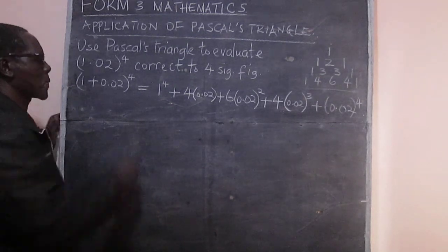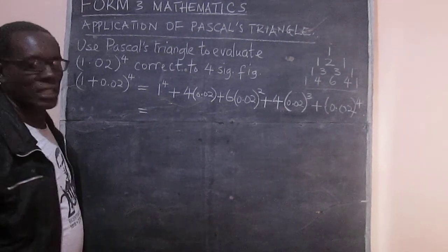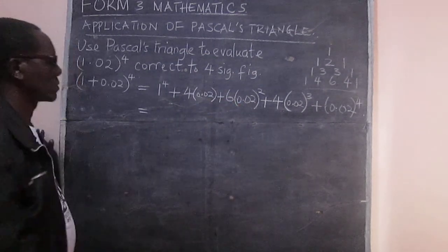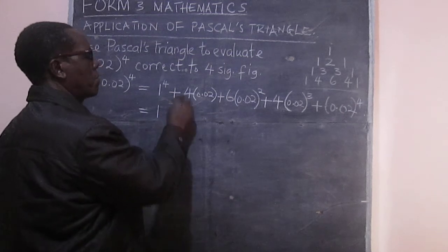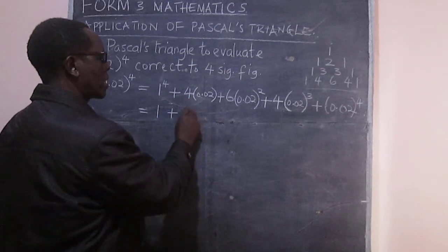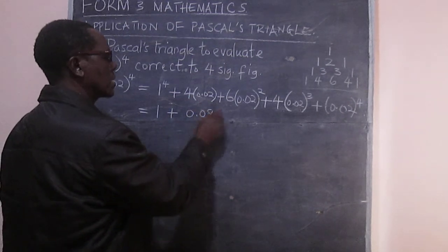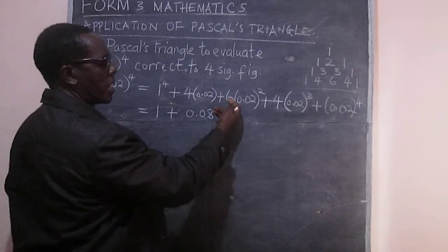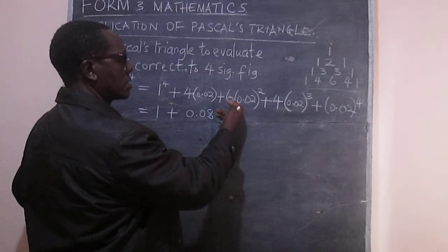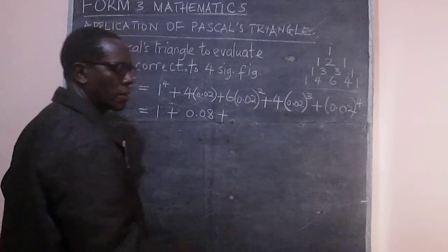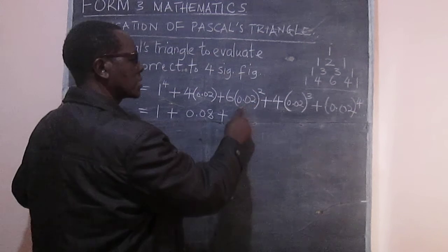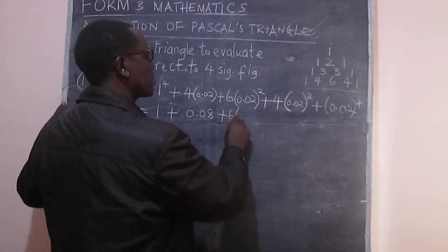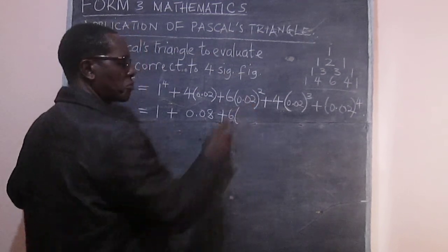So the remaining bit now is to simplify this. 1 raised to the power of 4 is just 1. Then here we have 4 multiplied by this, and that gives us 0.08. Now we have 6 times 1, now we are squaring this.